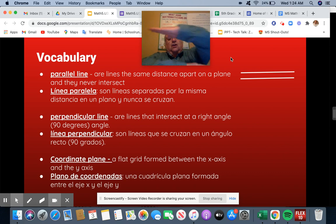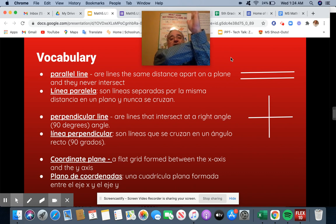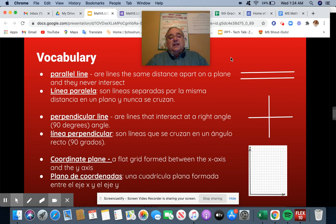Parallel lines are lines that do not meet. They never intersect, and they're the same width apart all the way through. Perpendicular lines are the ones that form a plus and have a 90-degree angle, and the coordinate plane is a flat grid between the x and y-axis.